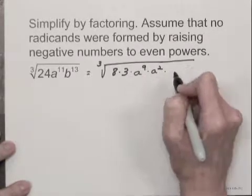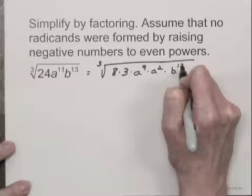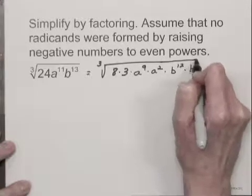And b to the 13th has a perfect cube factor of b to the 12th. So I can write that as b to the 12th times b.